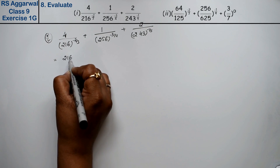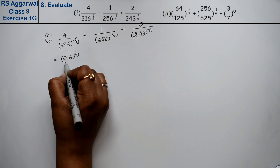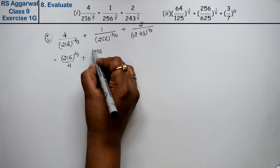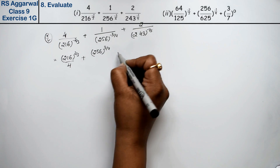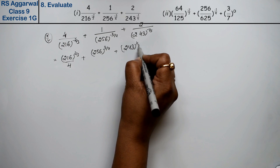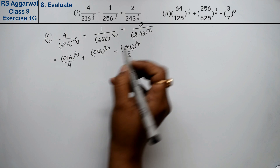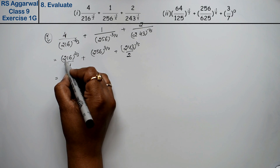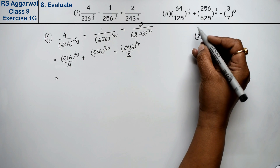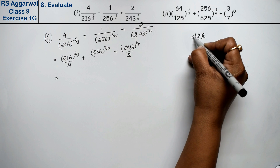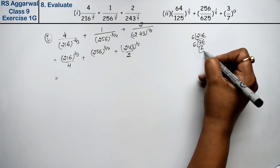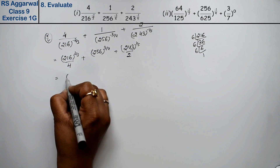After taking the reciprocal, that means we get: 216 to the power 2 upon 3, upon 4, plus 256 to the power 3 upon 4, plus 243 to the power 1 upon 5, upon 2. Now let's find the factors of 216. We get 6 × 6 × 6, that means 216 = 6 to the power 3.